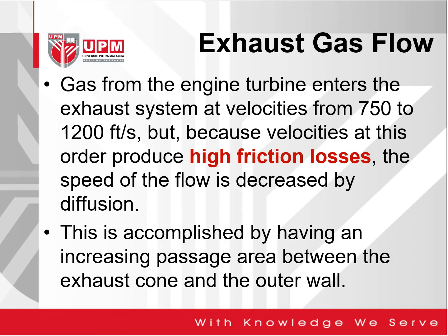The gas from the engine turbine enters the exhaust system at high velocities, between 750 to 1200 feet per second. But because velocities at that level produce high friction losses, the speed of the flow is decreased by diffusion. This is accomplished by having an increasing passage area between the exhaust cone and the outer wall.